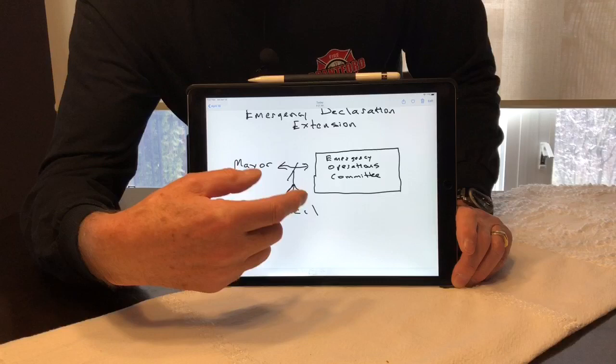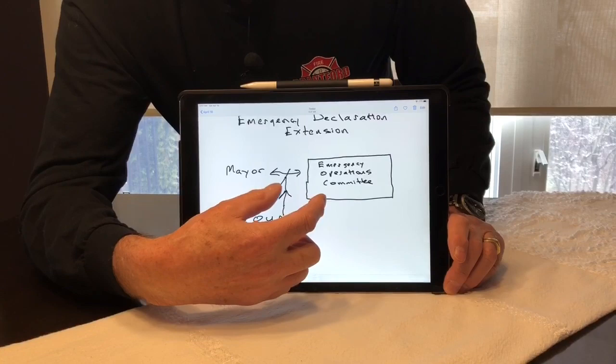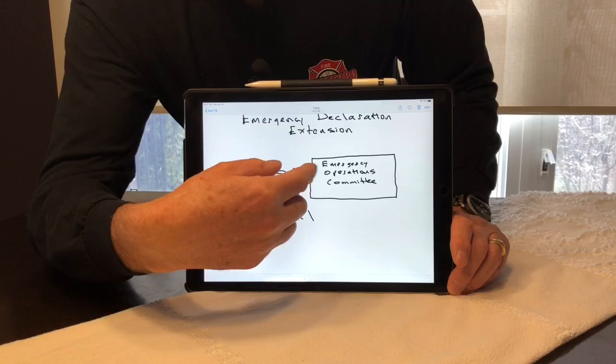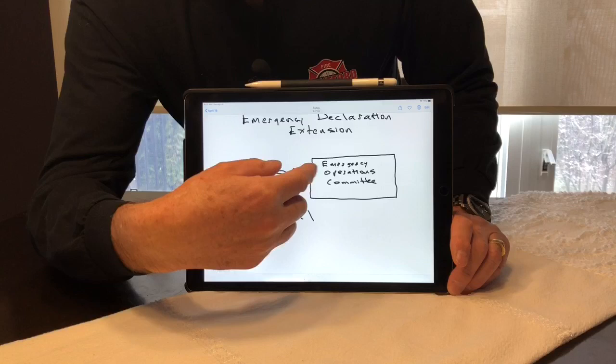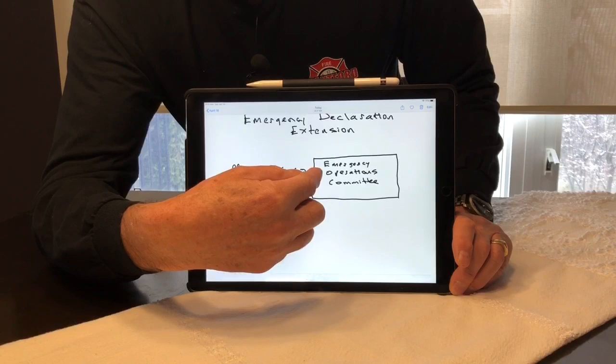So with the emergency declaration continuing, this continues and it's a good decision making arrangement. So this group, all the leaders of the community, they make decisions and recommendations to me as mayor. And then I can also send to them issues I'd like them to consider. And so this arrangement will continue so long as the emergency operations center believes it should be in place.